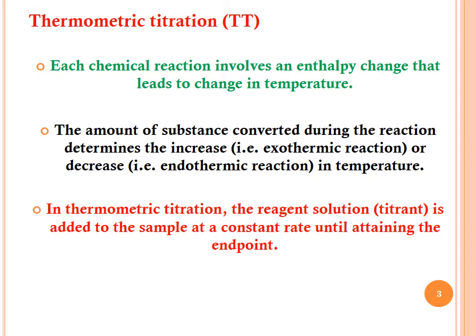The amount of substance converted during the reaction determines the increase—exothermic reaction—or decrease—endothermic reaction—in temperature. In thermometric titration, the reagent solution (titrant) is added to a sample at a constant rate until the endpoint is attained. This is similar to normal titration done at room temperature, but here we measure the change in temperature resulting from the reaction between titrant and titrand.